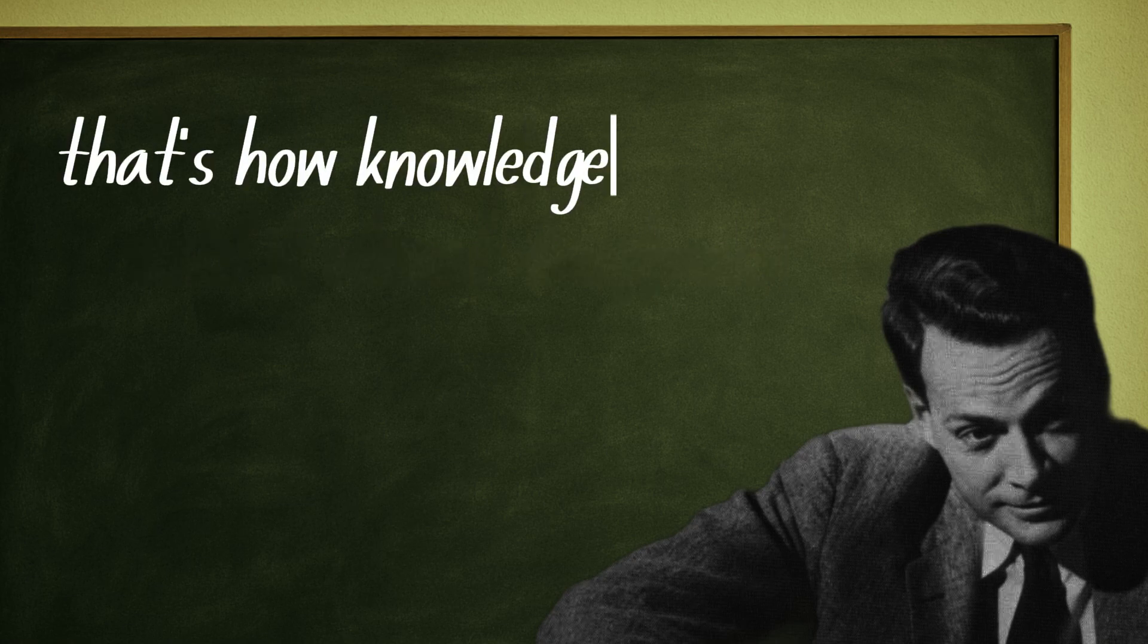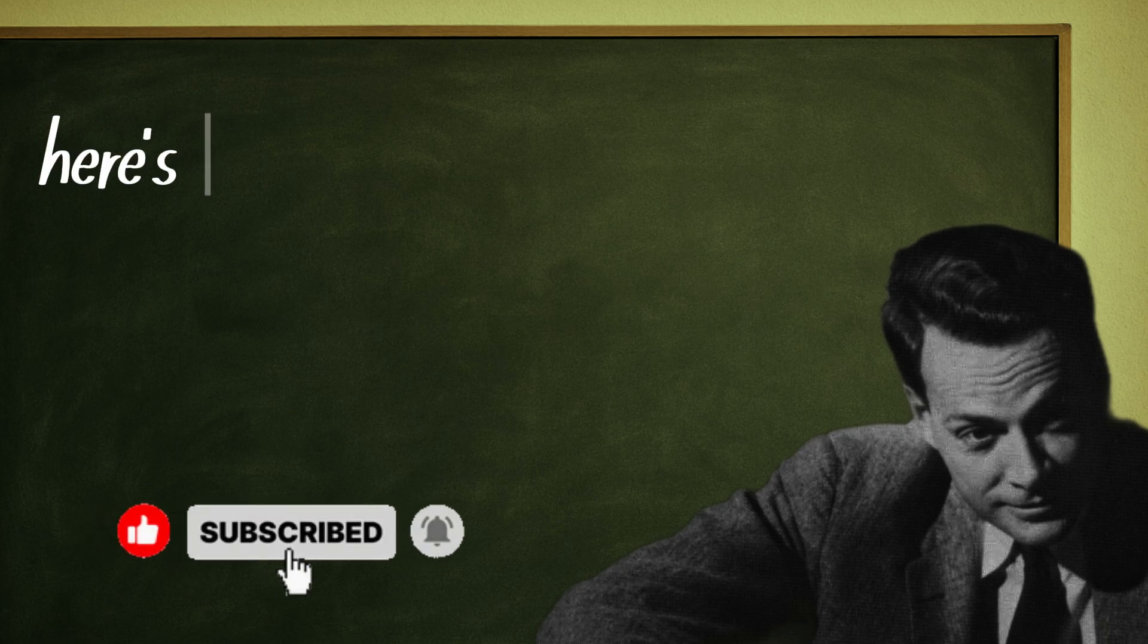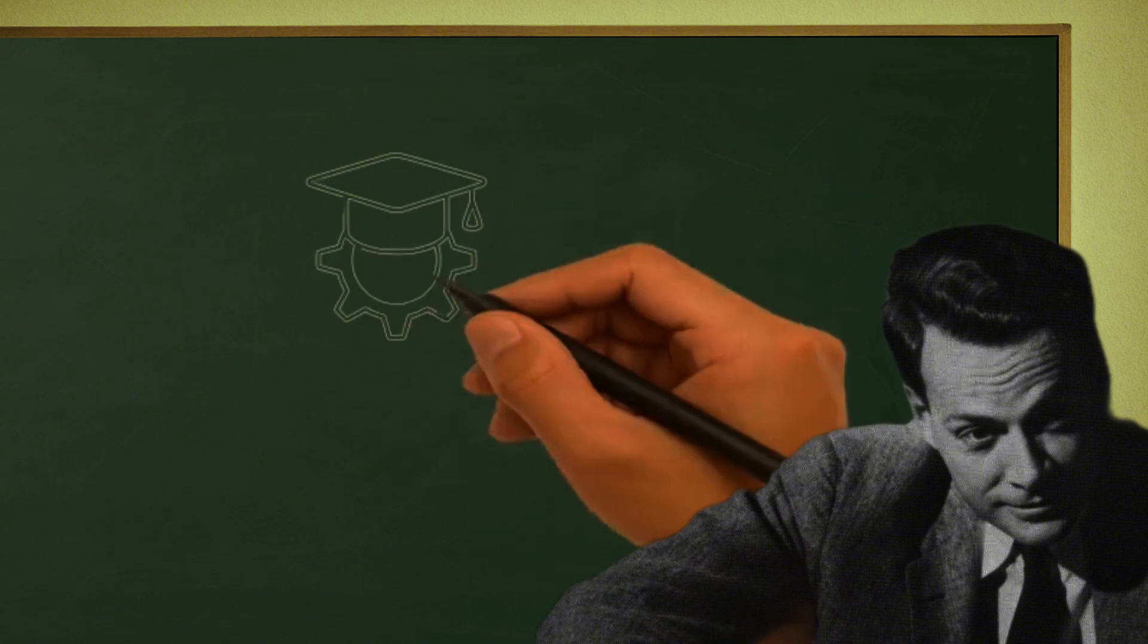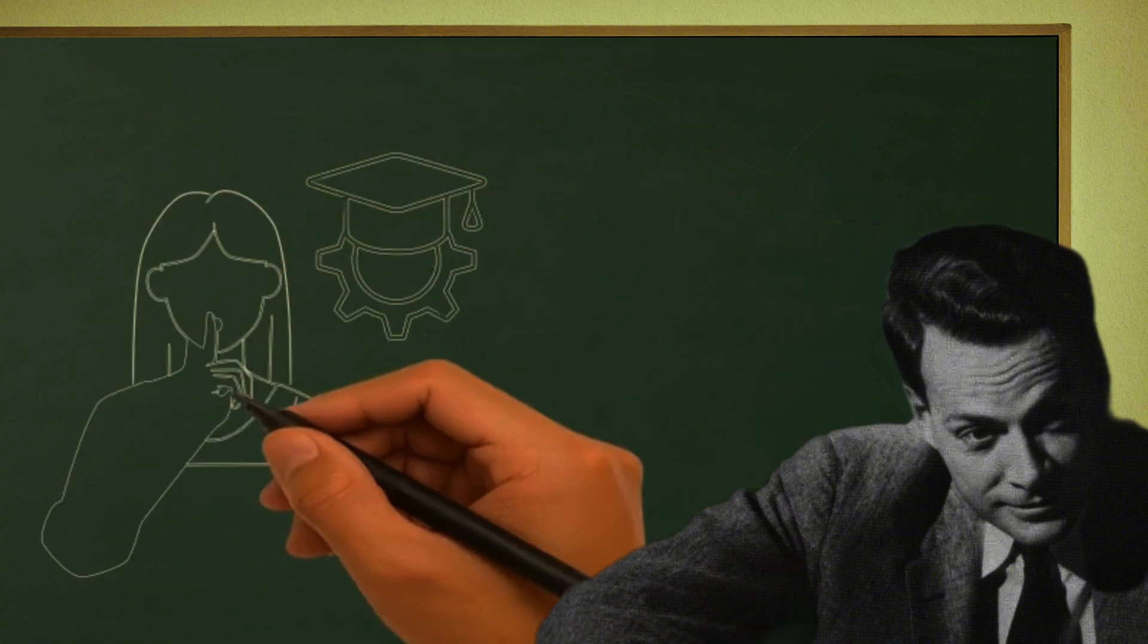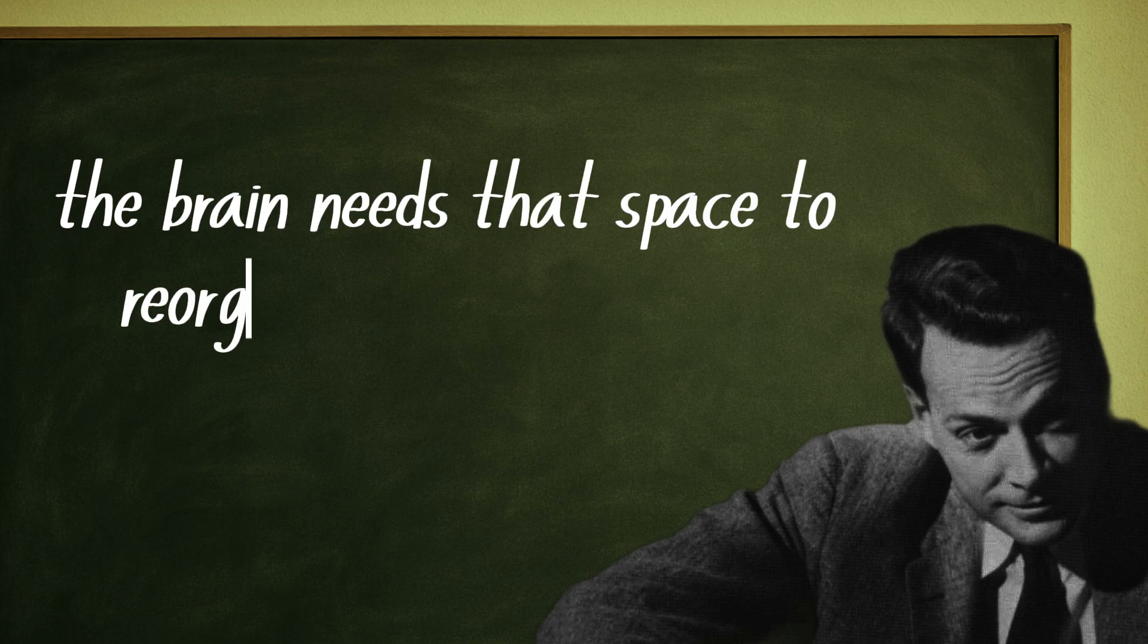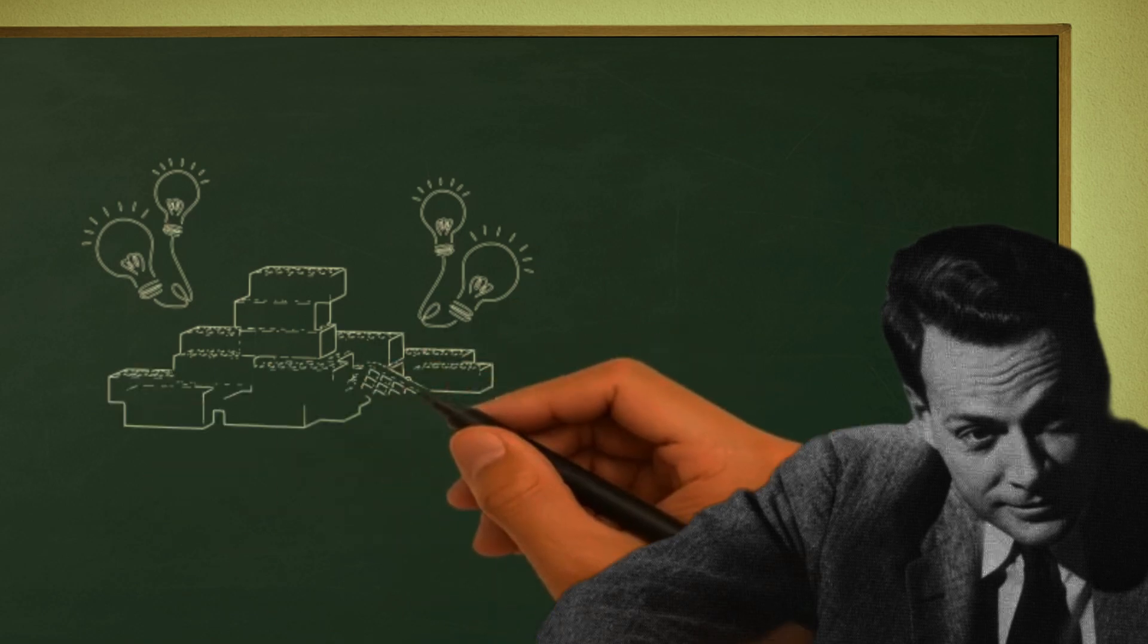That's how knowledge becomes solid, enduring, and impossible to erase. Here's the key: you don't need to learn more, you need to review better. The secret is to spread your learning over time in small doses at different moments. The brain needs that space to reorganize its connections, like letting cement dry before adding another brick.